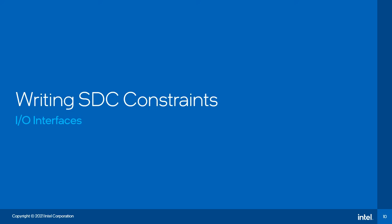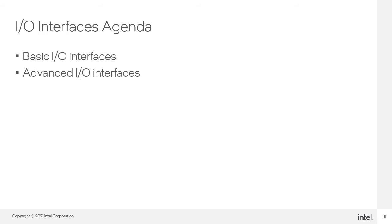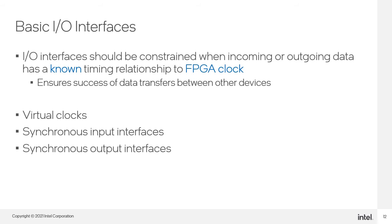In this training, I will be going over SDC constraints for IO interfaces. I will first go over the basics for constraining IO interfaces and then expand on those basic concepts with more complicated examples. Incoming and outgoing FPGA data with a known timing relationship to the FPGA clock need to be constrained to ensure the success of data transfers between devices. Part of the IO constraints involves using virtual clocks, which we will see how to use in the coming slides.